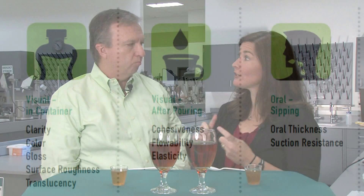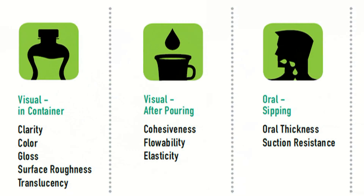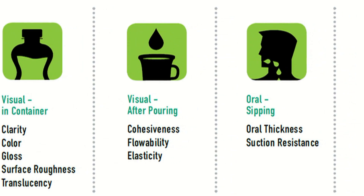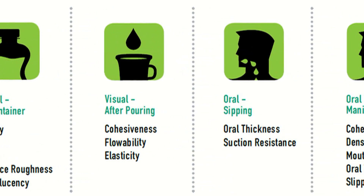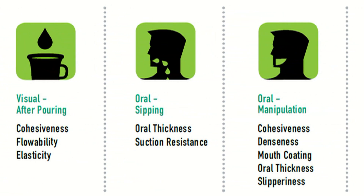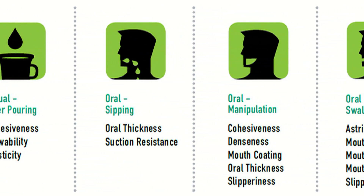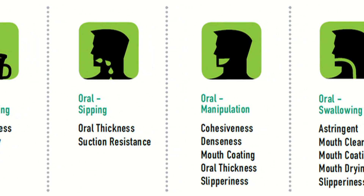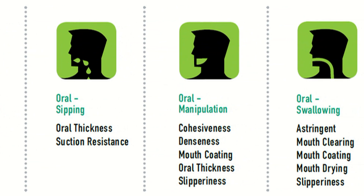How do you characterize the textural attributes of this so you can engineer that? We're going to do a texture map. Right from the beginning we take our control sample — we look at it visually, mechanically, and from an oral perspective: first in your mouth, a few times in your mouth, and how you swallow it.